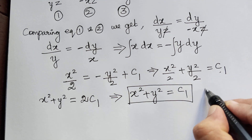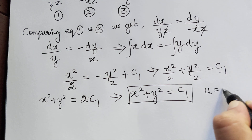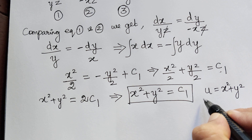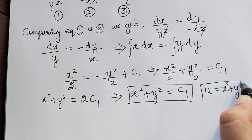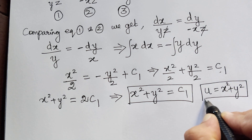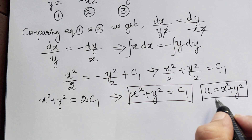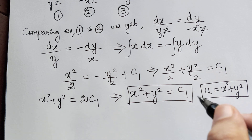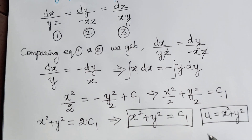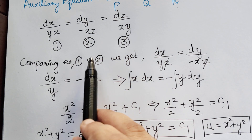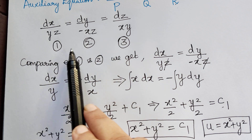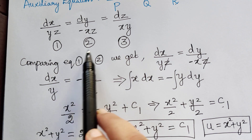Therefore, the first solution u is equal to x squared plus y squared. In a similar manner, we have to obtain the second solution v by comparing the other two equations — we can compare equations 2 and 3, or equations 1 and 3. It is our choice.